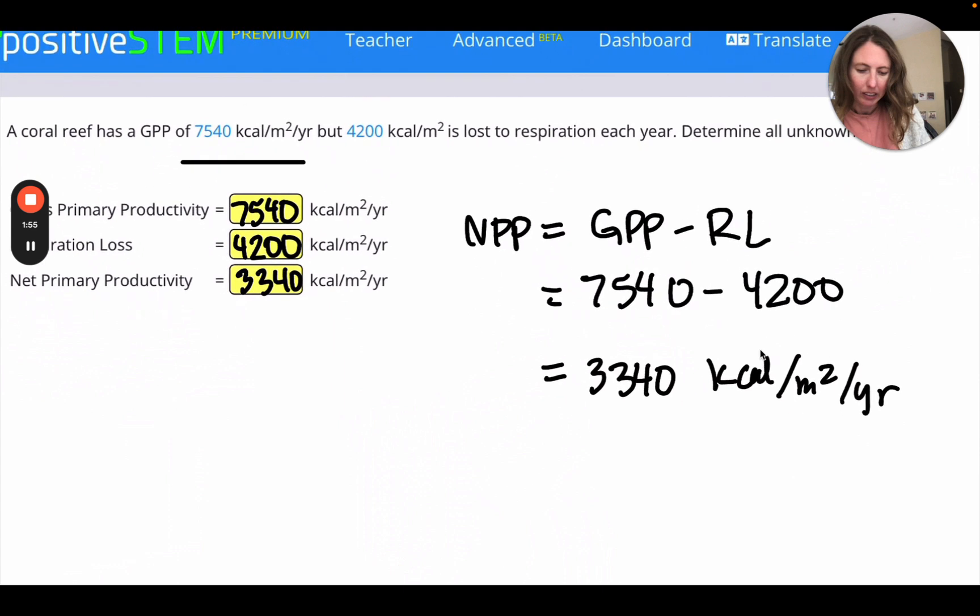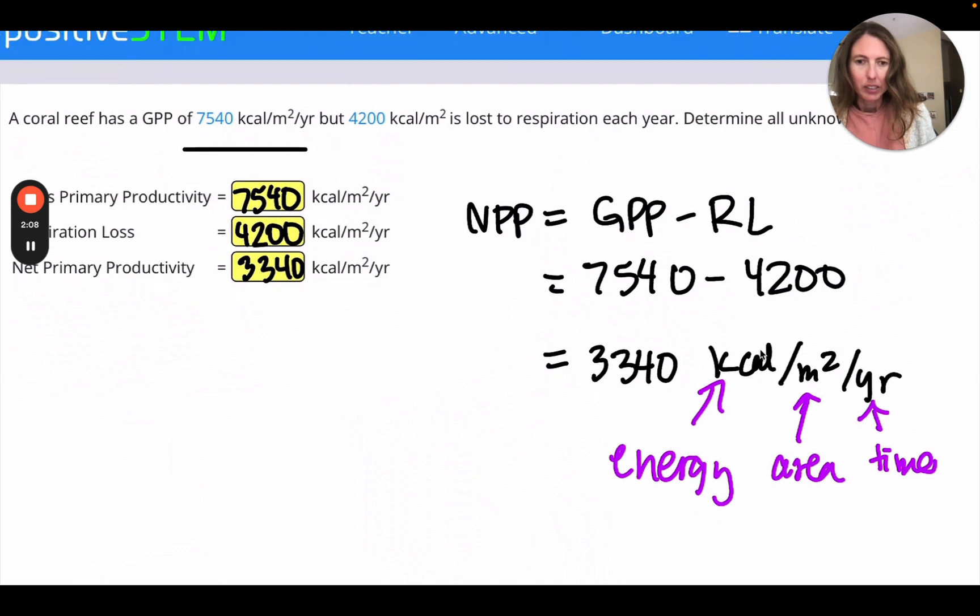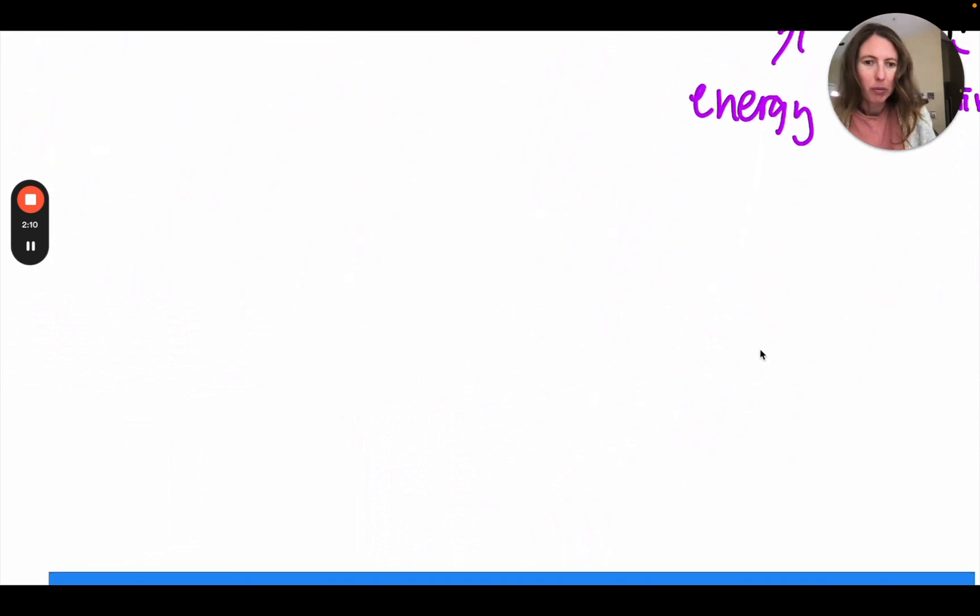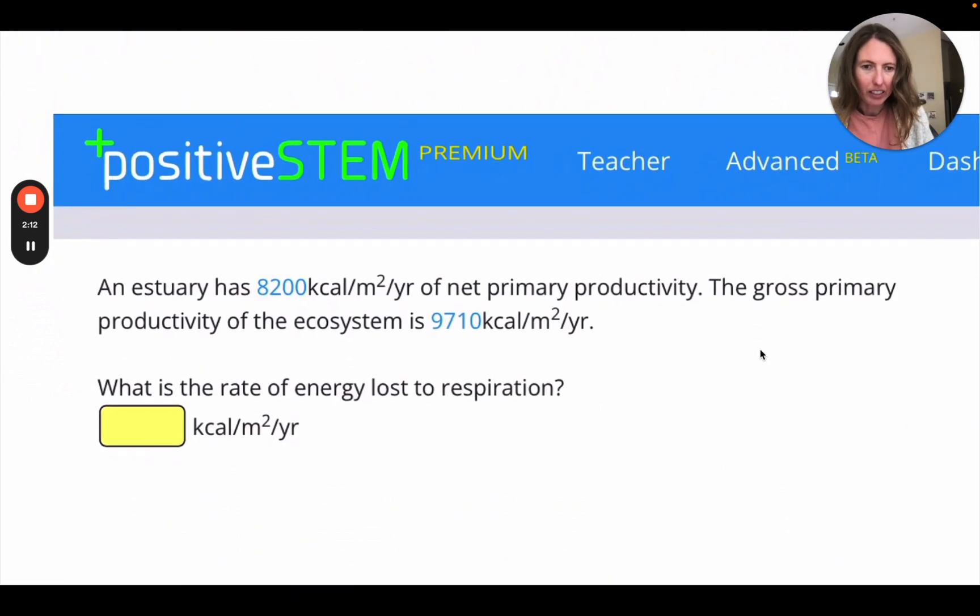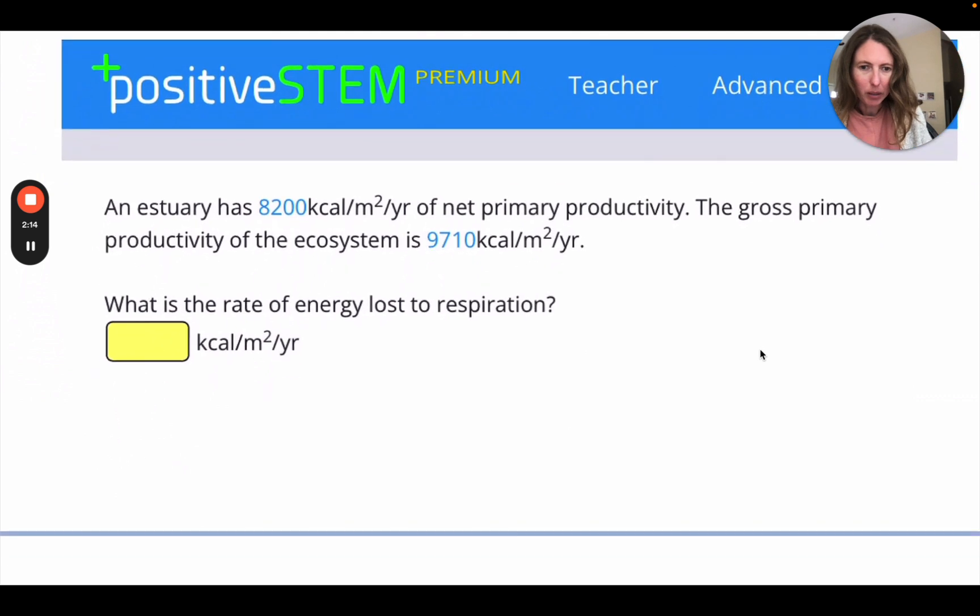And by the way, it might help to notice that this is an energy, an amount of energy per area per time. So as you go on, you won't see the three boxes. You'll just find the unknown. It might help to jot down the knowns and unknowns, though.